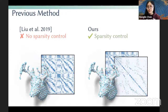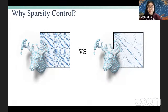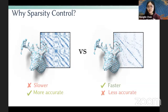However, their method has no sparsity control of the coarsening matrix and results in a denser operator. In contrast, our method allows the user to freely control the sparsity pattern. Moreover, their method uses a non-convex formulation, so their gradient descent may not converge to the global optimum, whereas our method successfully formulates the problem as a convex optimization. A sparser matrix means less computation cost and is faster, while a denser matrix has more degrees of freedom and may better preserve the spectral properties. Our sparsity control allows for a trade-off between spectral accuracy and the cost of applying the operator.